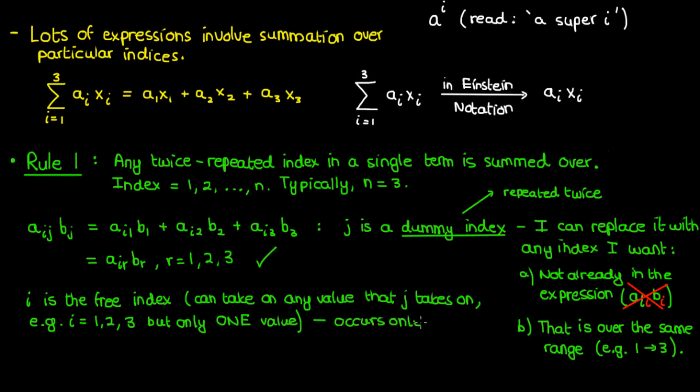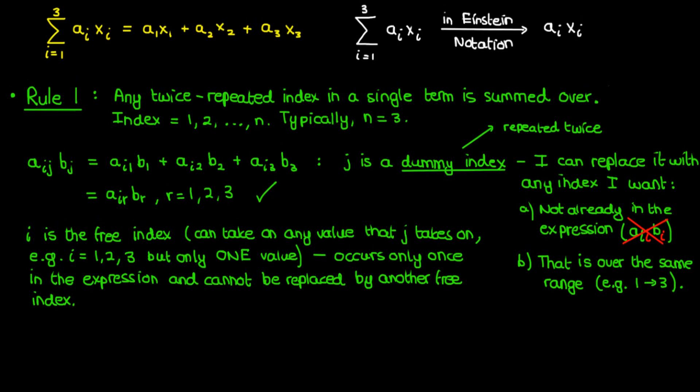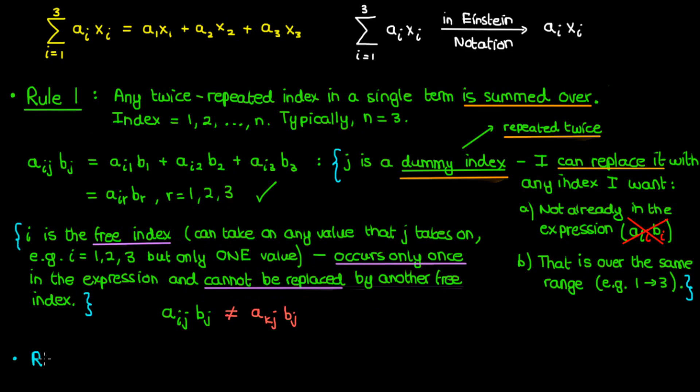Now unlike the dummy index, the free index occurs only once in a given term, and we cannot always replace the free index by another free index. For example, I can't just replace the free index i in a sub ij times b sub j by another free index k, and necessarily get the same result. k could be 2, for instance, and i could be 1. With a dummy index, though, you can perform a replacement without too much trouble. So just to summarize, a dummy index is summed over, it occurs twice, and it can be replaced by another dummy index. A free index is not summed over, it only occurs once, and it cannot be replaced by another free index. These definitions of dummy and free indices, I'm going to call them rule 2.